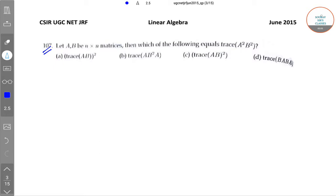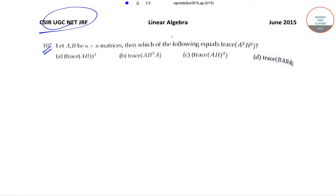Hello students, welcome to Softest Classes. Today we'll be solving the CSIR UGC NET JRF exam question from the June 2015 paper. We'll be solving the linear algebra questions today. The question that we'll be solving today came for three marks in the exam. So let's start off with the question. The question is that let A and B be